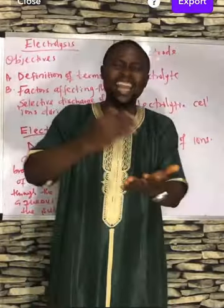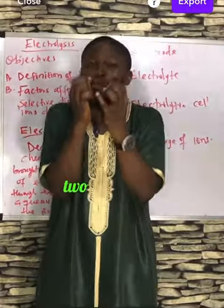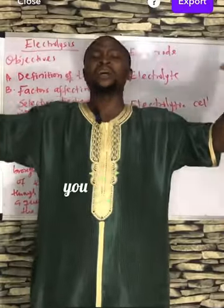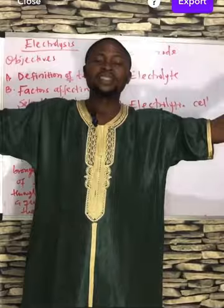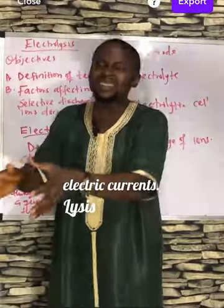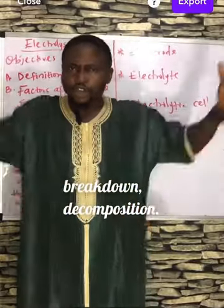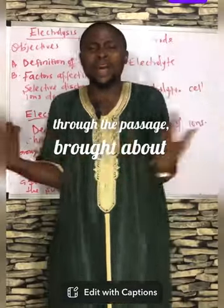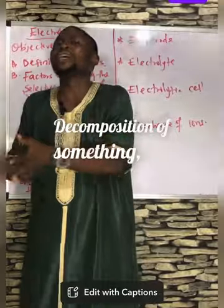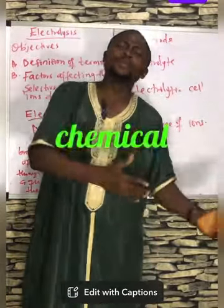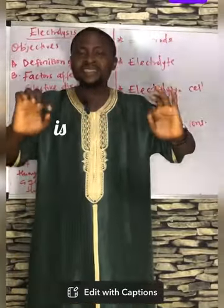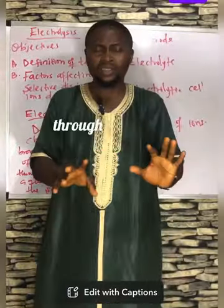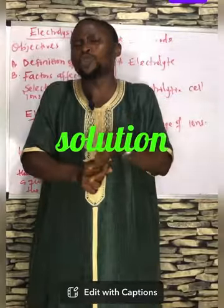So we're going to be starting with electrolysis. There are two root words that make up electrolysis. First of which is 'electro' and the second one is 'lysis.' Put these two words together, you get electrolysis. Electro means passage of electric current. Lysis means breakdown or decomposition. Bring the two meanings together, you get decomposition of something brought about by the passage of electric current. As long as we're talking about chemistry, we're looking at chemical substance. So electrolysis is the decomposition of a chemical substance brought about by the passage of electric current through the molten state or the aqueous solution of the substance.